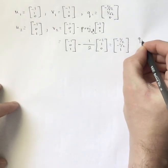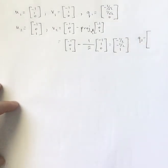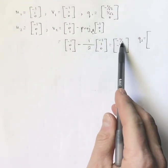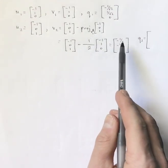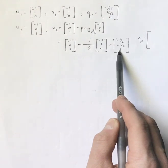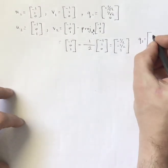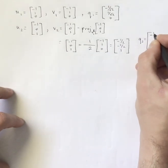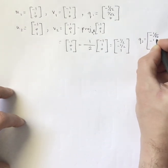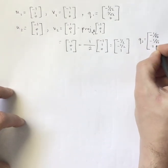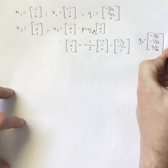And Q2, so this, the magnitude of this is 1 fourth plus 1 fourth plus 1, which is 3 halves square root of that, which is root 6 over 2. So if we divide all the entries by root 6 over 2, I get negative 1 over root 6, negative 1 over root 6, and 2 over root 6.